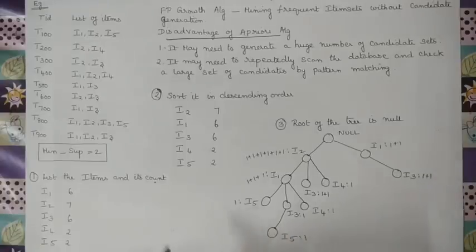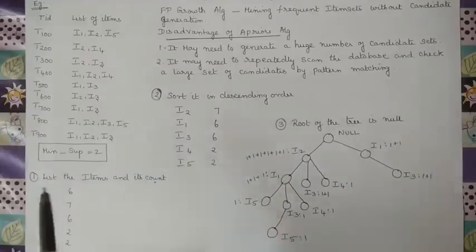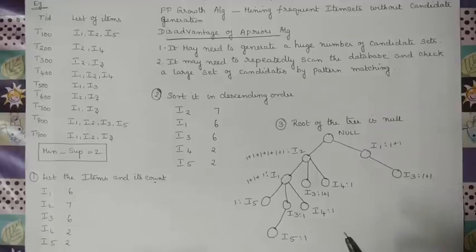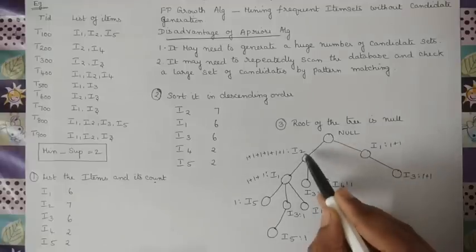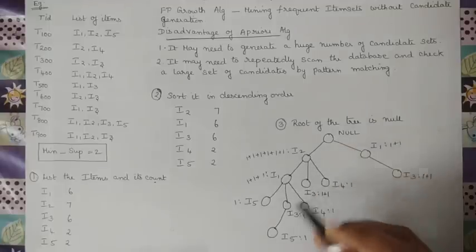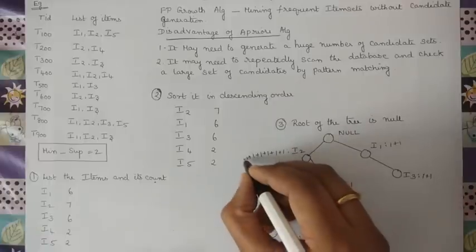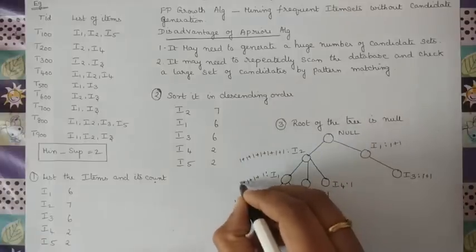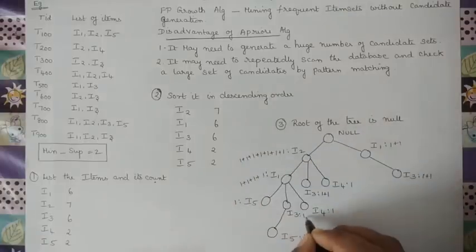The last transaction is I1, I2, I3 — arranged in descending order as I2, I1, I3. Following the existing path, I2 gets plus 1, I1 gets plus 1, and I3 gets plus 1.